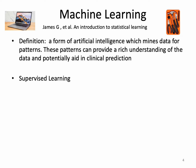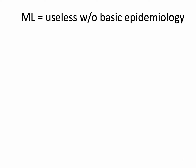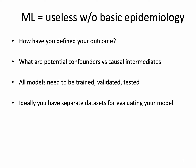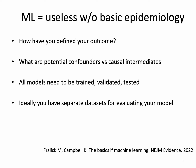The major divides in machine learning are supervised learning versus unsupervised learning. Machine learning is totally useless if you've forgotten some basic epidemiology. Important epi-related questions include: how have you defined your outcome, and does it really represent the ground truth? What are the potential confounders versus causal intermediates? Ideally, the prediction model you're creating should be trained, validated, and tested on separate datasets — failing to do that will lead to predictions that are just too good to be true. Kieran Campbell and I wrote a recent paper about the basics of machine learning in New England Journal of Medicine Evidence, if you want to read more.